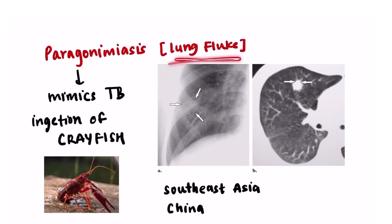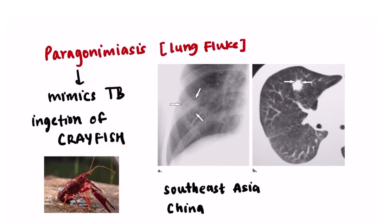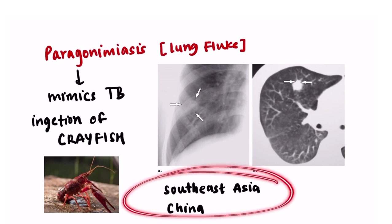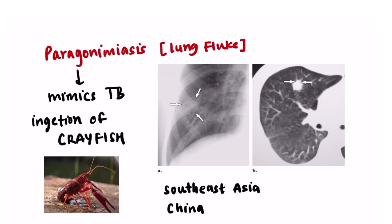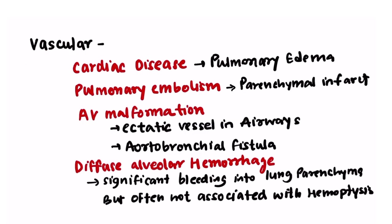Paragonimiasis is a kind of lung fluke that mimics tuberculosis. It occurs due to ingestion of crayfish and is common in Southeast Asia and China. So in immigrants from these places who complain of hemoptysis, this should be a differential diagnosis. Moving on to vascular causes — first is cardiac disease.